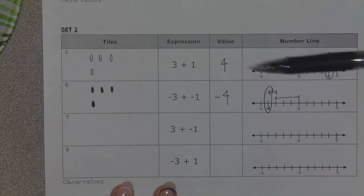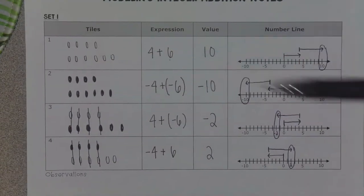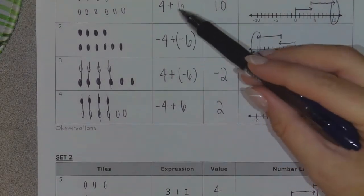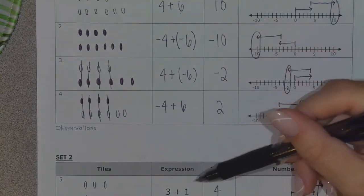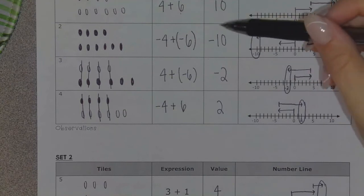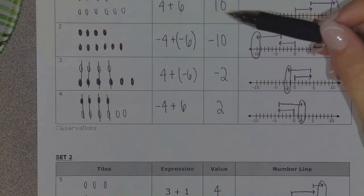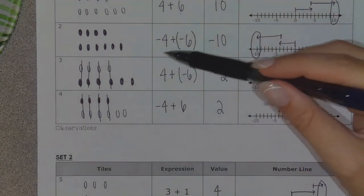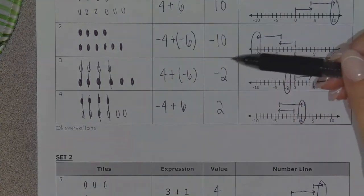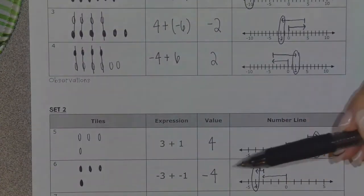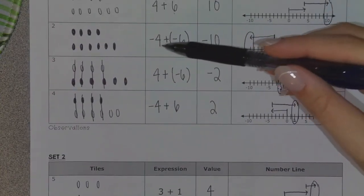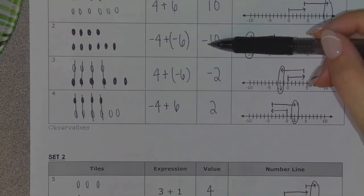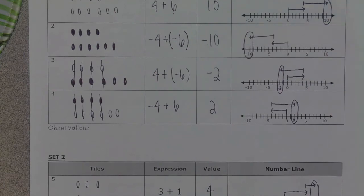Here's what I'm seeing when I look at these two expressions and my two expressions from up top: when I have two positives, four plus six gives me 10, three plus one gives me four — everything stayed positive. So a positive and a positive just gave me a bigger positive. But when I have two negatives — negative four plus negative six gives negative 10, negative three plus negative one gives negative four — it looks like when I have two negatives, I still add those numbers together and keep the negative sign in front of it.